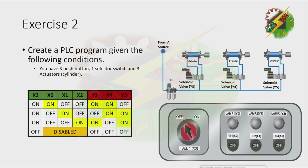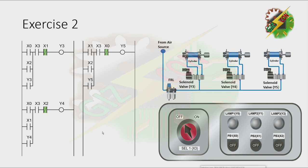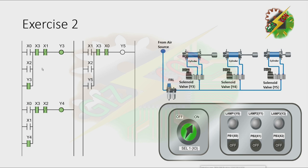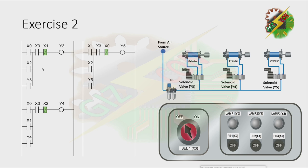Okay, let's continue. This will be my answer for this exercise. Now let's turn on the selector switch. Then let's press PB1. Now let's press PB2. Then let's press PB3. Okay, that's it. Now let's go to our next exercise.